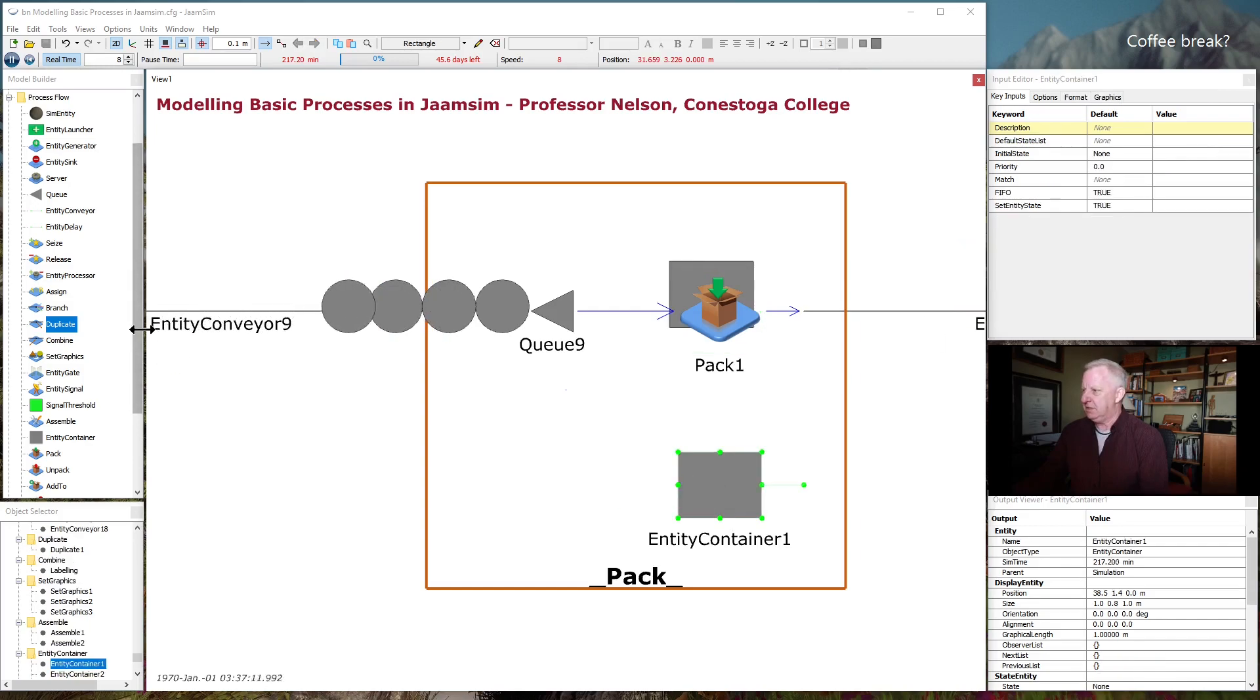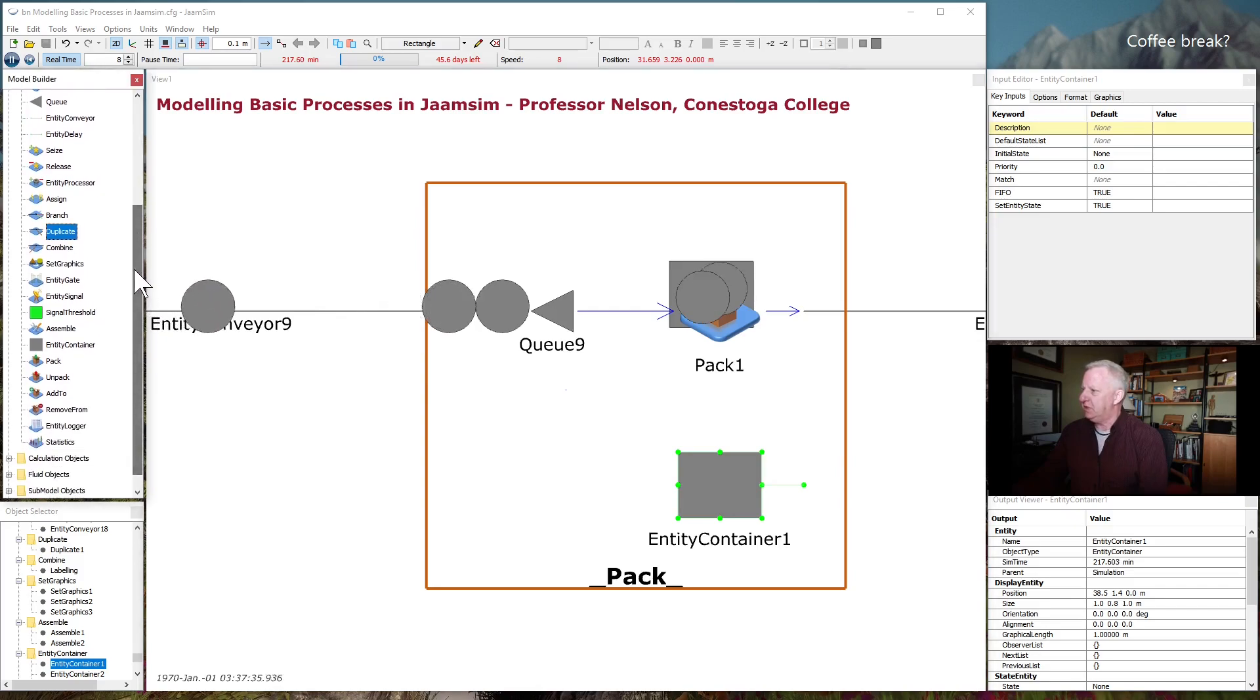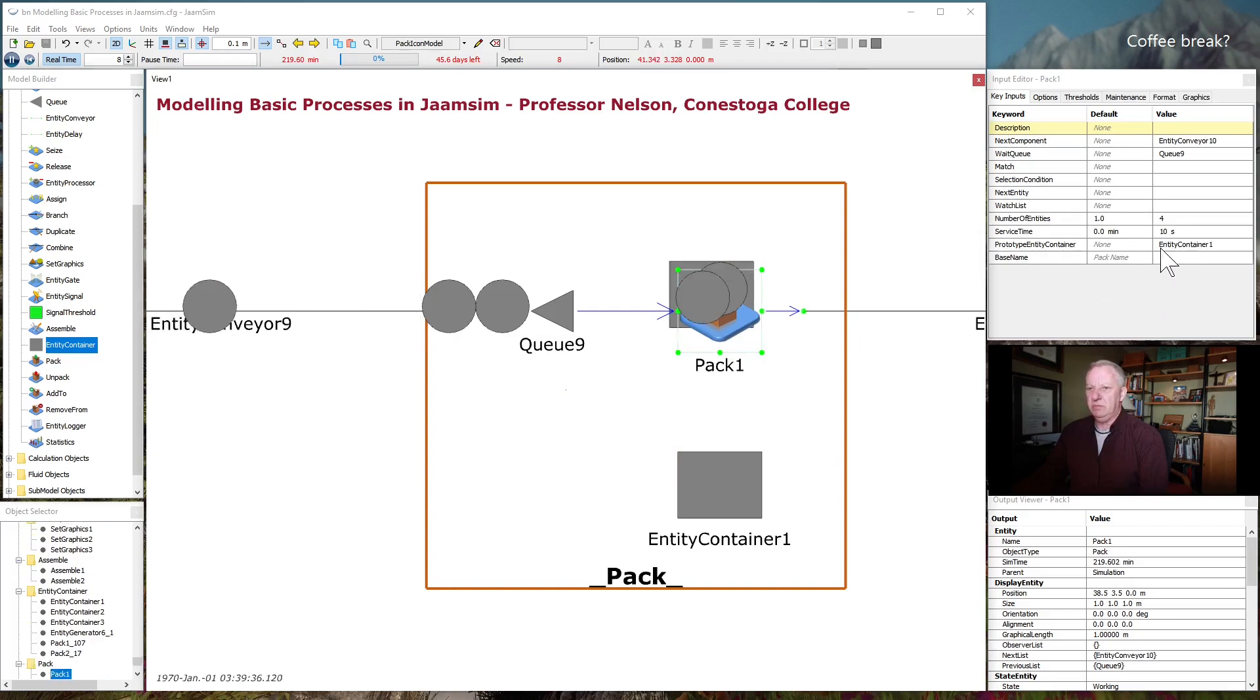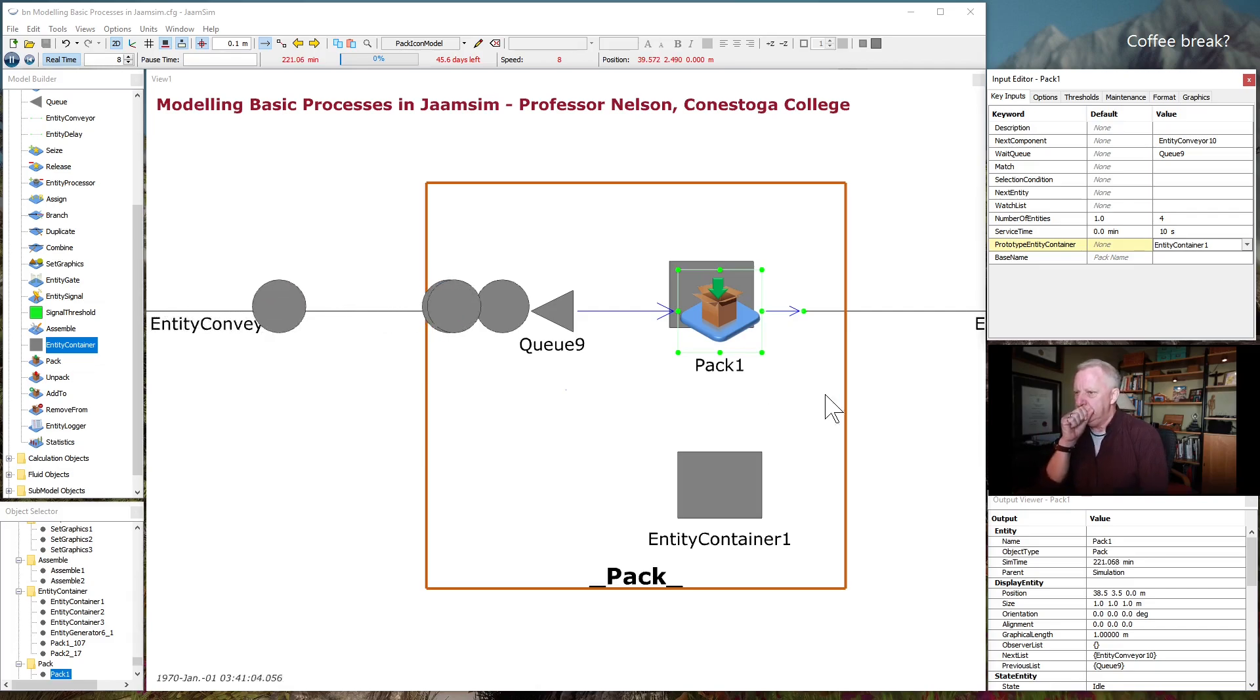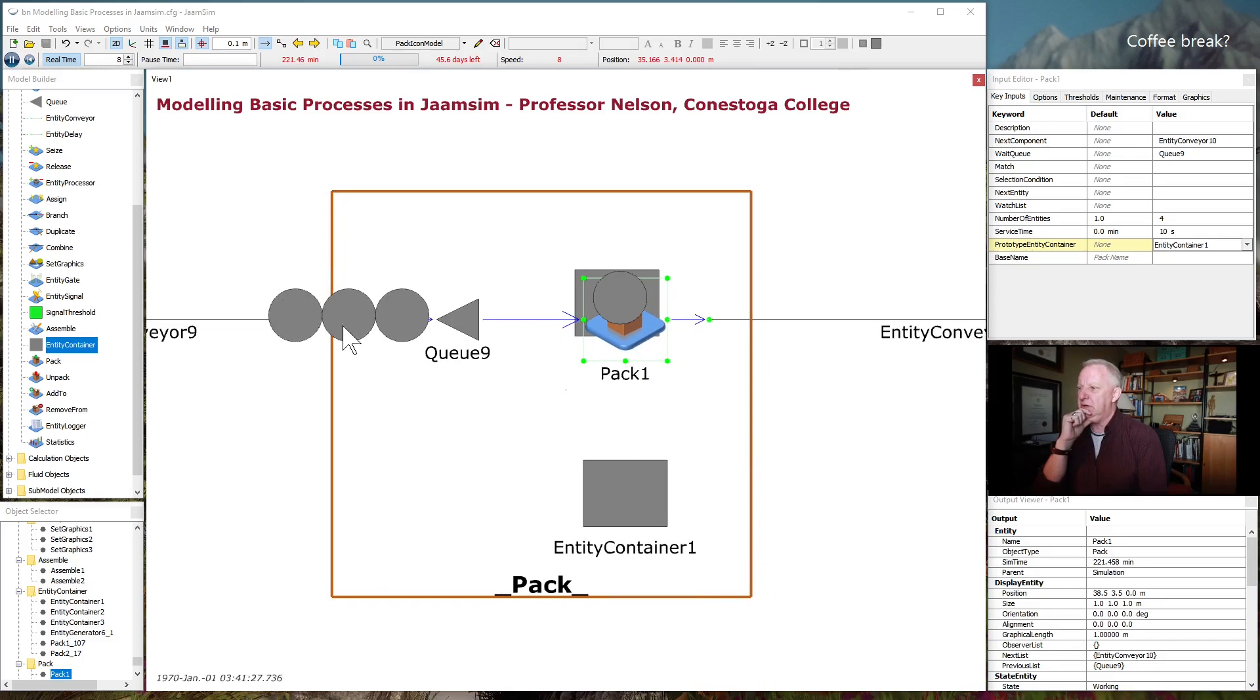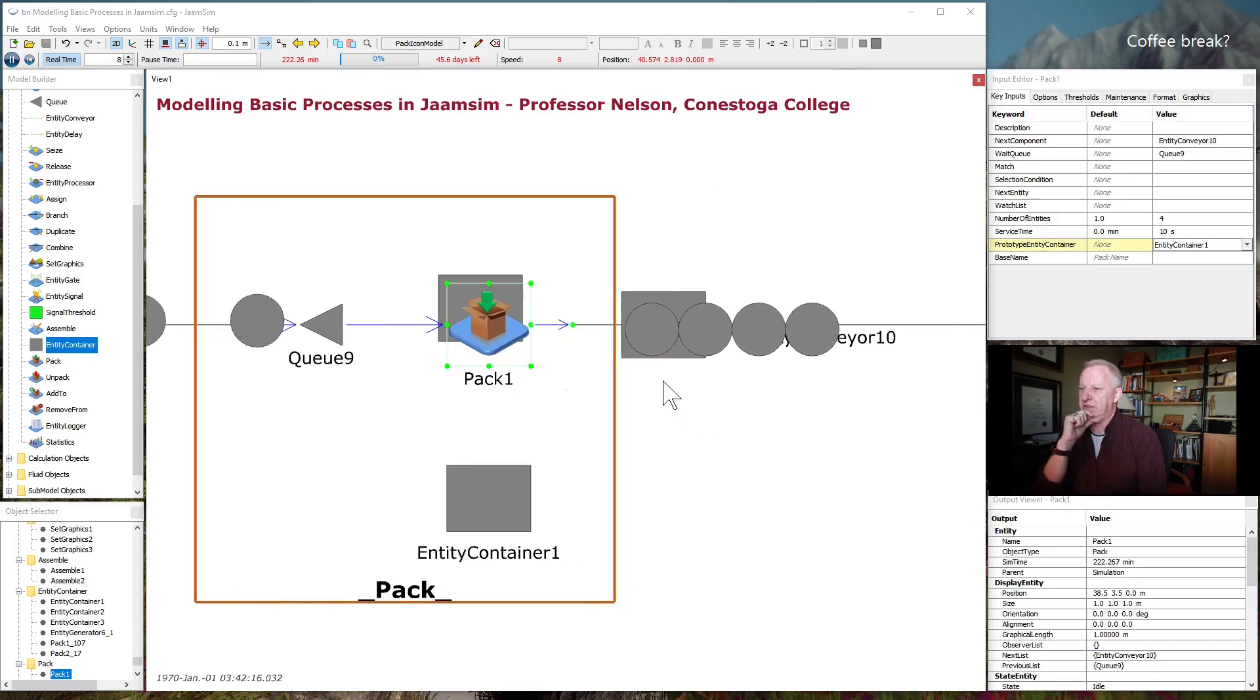So you have to define this prototype entity container. And so this is like the sim entity, but it's a special entity. It's actually a, there is an entity container to pull from the menu. An entity that can hold one or more other entities. So it's a special one. So you drag this one into your model. And pack operation, then you choose your entity container from the list of available containers. Now you might see in a moment. So this will take four of these entities, pack them into the container, and pass it on to the next process.